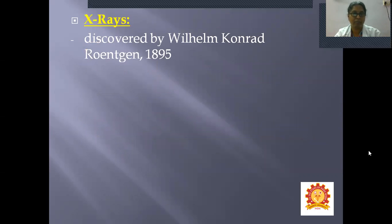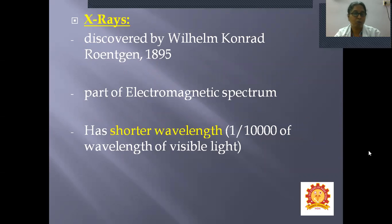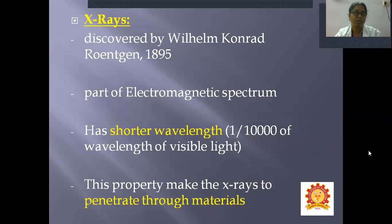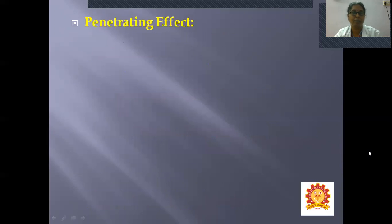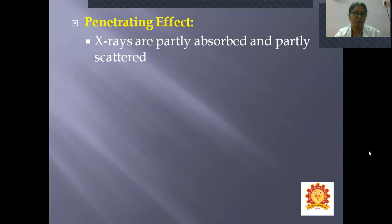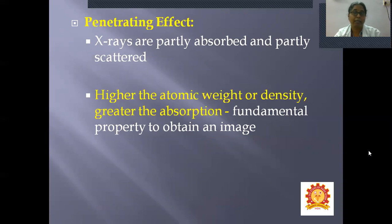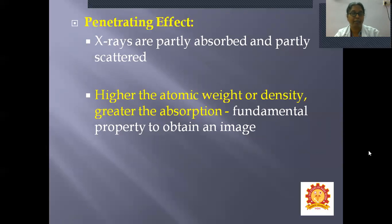X-rays were discovered by Röntgen in 1895. X-rays are part of the electromagnetic spectrum and have a shorter wavelength — one ten-thousandth of the wavelength of visible light. This shorter wavelength property makes X-rays penetrate through materials. When X-rays pass through a material object, they are partly absorbed and partly scattered. Higher atomic weight or density results in greater absorption. The amount of radiation absorbed depends upon the atomic weight and density of the substance — this is a fundamental property used to obtain an image.